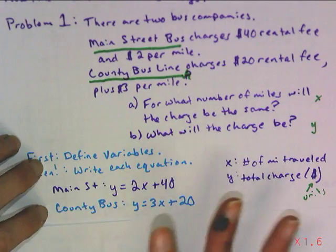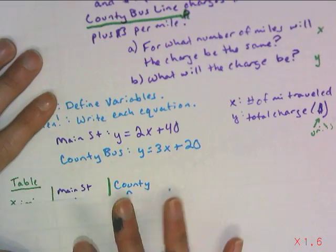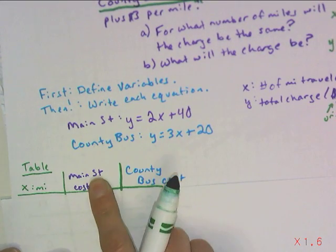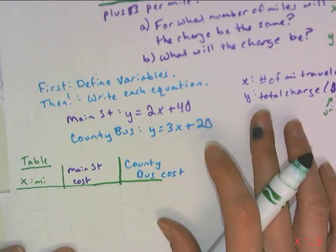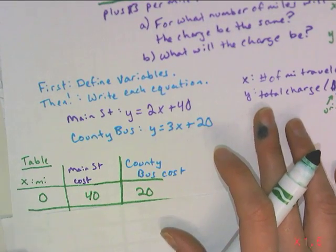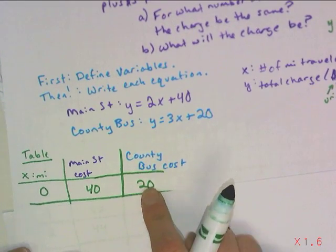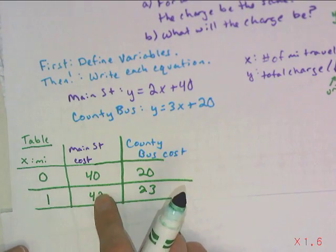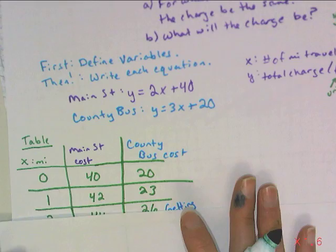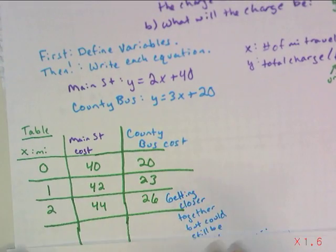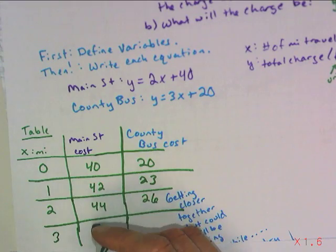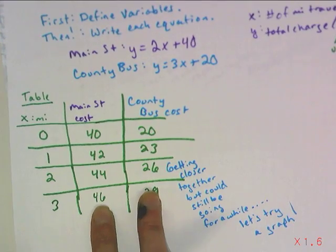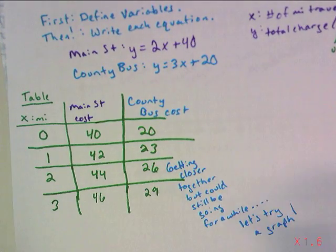If we're going to solve this using a table, our first method, our table looks like this. We have x, which is your miles, and then we have the cost according to the purple company, Main Street, and the blue company, county bus. At zero miles, neither one of these are proportional. Main Street starts at $40, and county bus starts at $20. Then my table is going to go up by one mile. Main Street goes up by two. County bus goes up by three. And what you start to notice is that these two numbers start to get closer and closer.